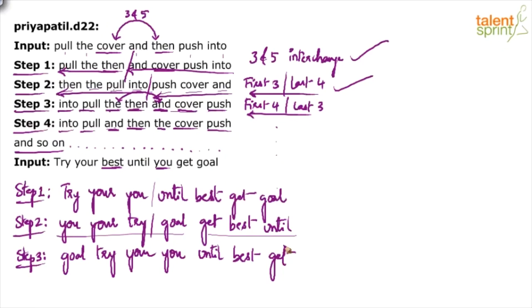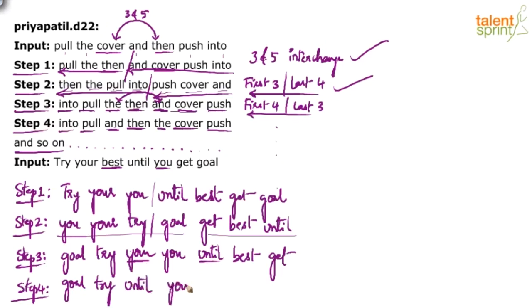Then step 4 again — the process repeats. In step 4 we interchange the third and fifth positions again. Goal as it is, try as it is, 'you' and 'until' get swapped. That's the process. Now there can be 5 questions asked — like for the given input, what will be position number 4 in step 3? Position 4 from the left is 'you'. You just look at the steps you have written and answer.